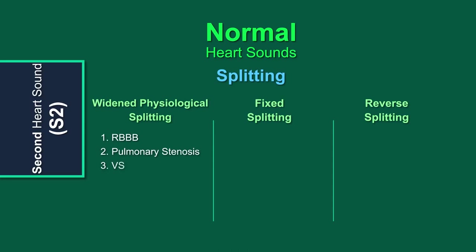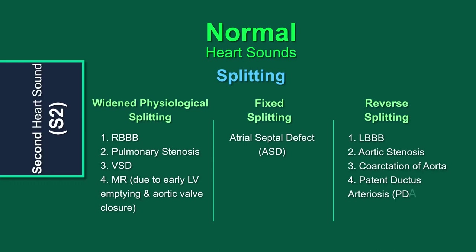Wide physiological splitting occurs in right bundle branch block, pulmonary stenosis, ventricular septal defect, and mitral regurgitation. The first three causes are due to delayed right ventricular emptying. Mitral regurgitation, on the other hand, leads to early closure of the aortic valve due to early left ventricular emptying. Fixed splitting occurs in atrial septal defects. Reverse splitting is seen in left bundle branch block, aortic stenosis, coarctation of the aorta, and patent ductus arteriosus.